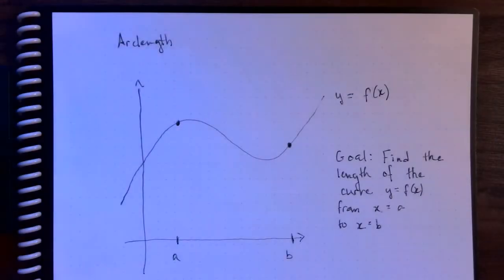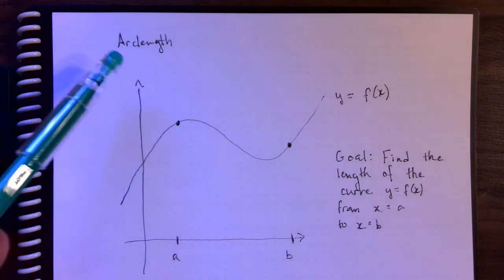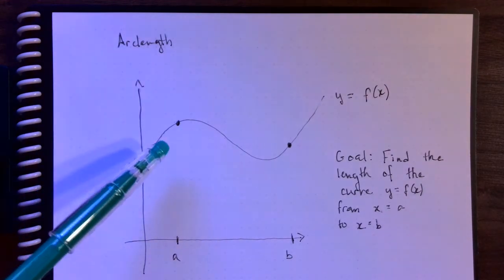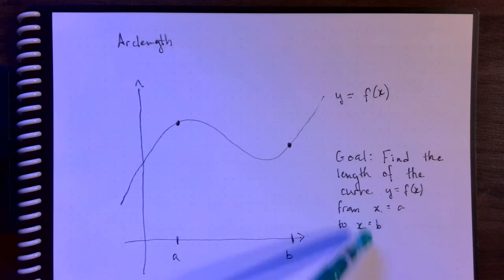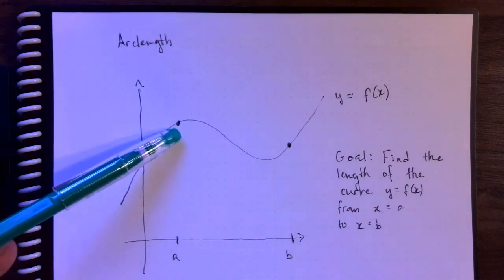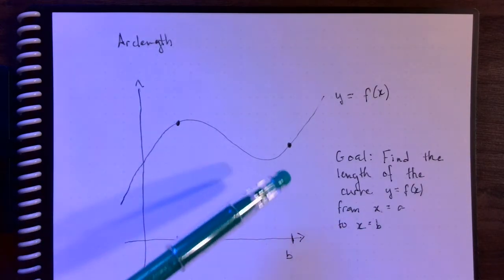Let me go ahead and switch to the document camera. So for finding arc length, when we're talking about arc length, we're talking about the distance traveled along a curve. The goal is to find the length of the curve y equals f of x, from the point where x equals a to the point where x equals b.